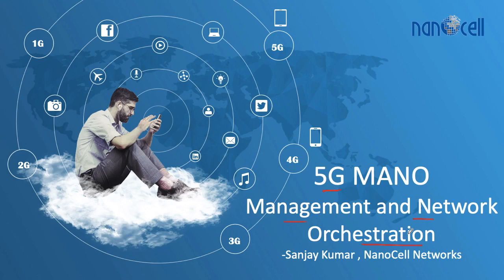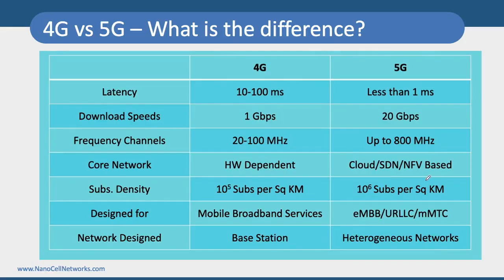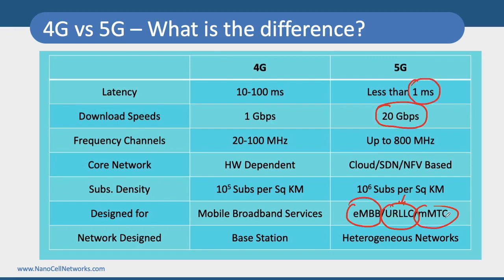My name is Sanjay Kumar and I am from Nanocell Networks. In this session we talk about 5G MANO — Management and Network Orchestration. We have so many different service verticals: eMBB, which talks about much higher data rates with peak data rates of 20 Gbps; URLLC, which talks about ultra reliability and low latencies in the order of one millisecond; and mMTC, which requires 1 million subscribers per square kilometer, where we plan to connect billions of sensors and devices to the network.